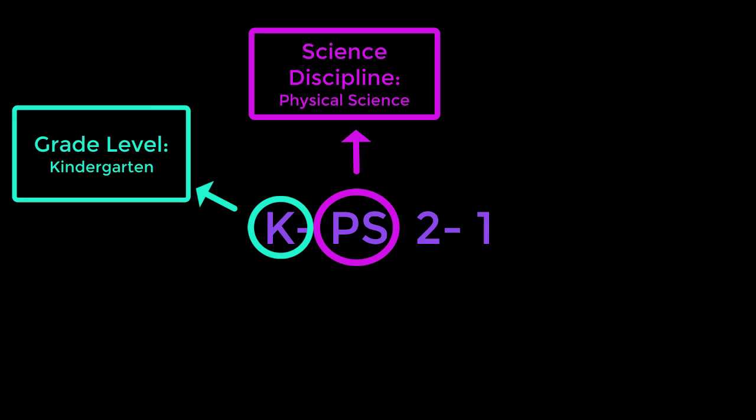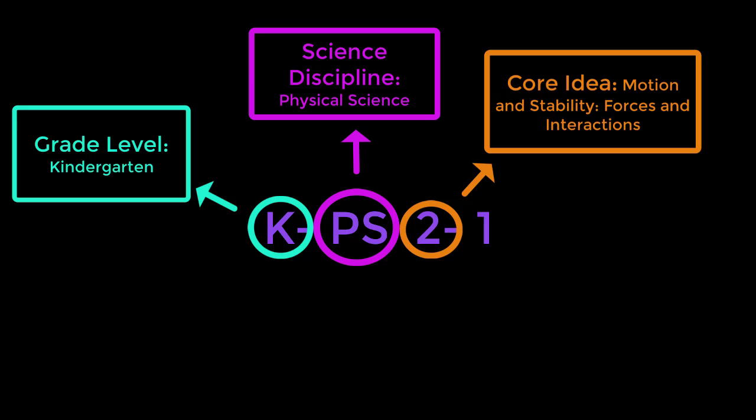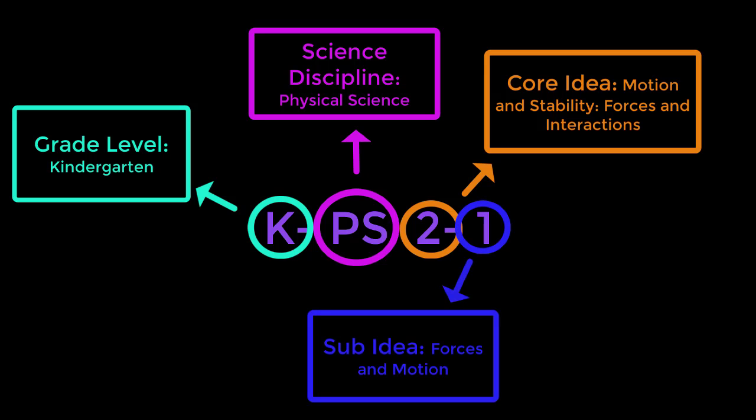The next set of characters represents the science discipline — in this case PS for physical science. We also have LS for life science, ESS for earth and space science, and ETS for engineering technology and the application of science. Next, from the framework comes the core ideas — in this case a 2, which represents motion and stability. Finally, we have the sub-idea, in this case forces in motion. So K-PS2-1 would read as kindergarten, physical sciences, motion and stability, forces in motion.